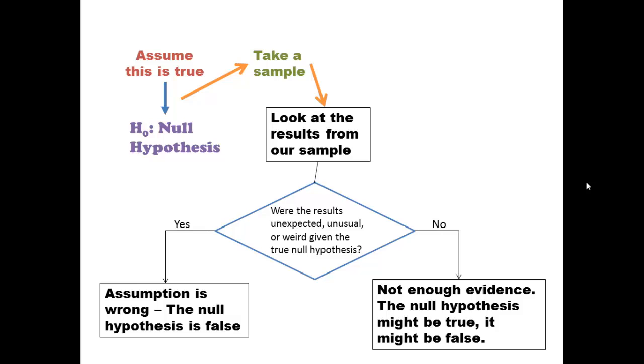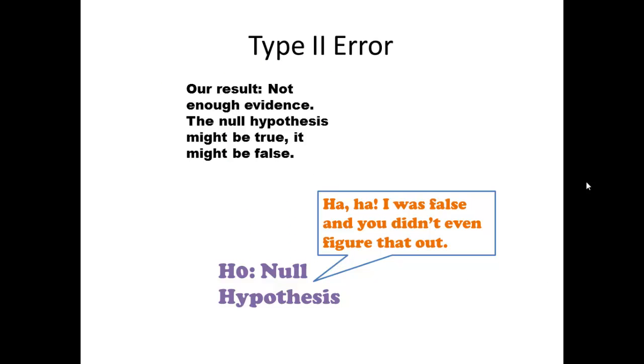But what if, unbeknownst to us, the null hypothesis actually is false, and our study didn't give us enough evidence to reject it, to say it was false? Then we have, unconsciously, ended up with a Type 2 error. We have failed to reject a null hypothesis that was actually false.